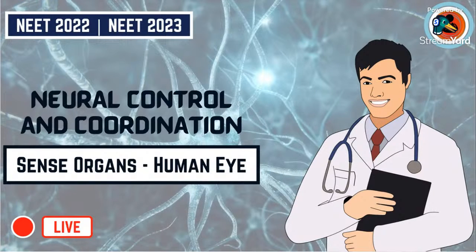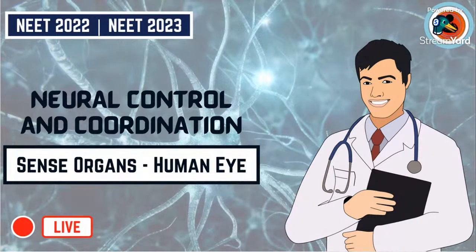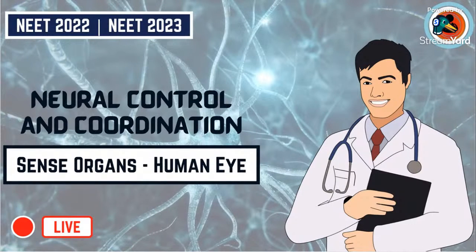Good evening everyone, and welcome to this lecture — lecture number five: Neural Control and Coordination, Sense Organs. In today's class we are going to start with the human eye. In your 10th class you studied about the detailed structure of the human eye, so today we will have a quick recap. There is nothing special or new; only a very few parts regarding the retina and names of certain cells which you must study new in this chapter.